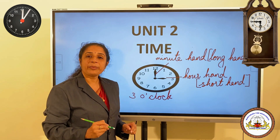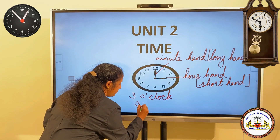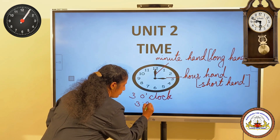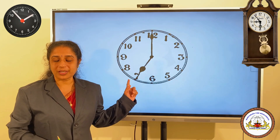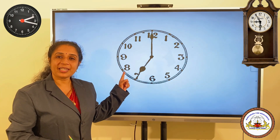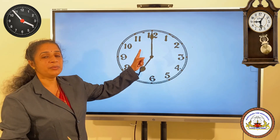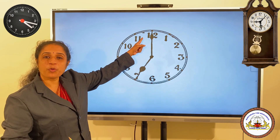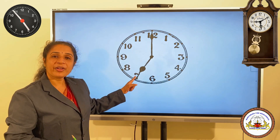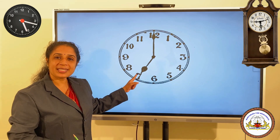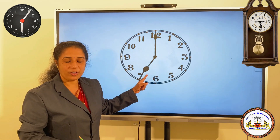Three o'clock can be written as 3 o'clock. Now, I have a question. Can you say the time? Look here. The minute hand points at twelve and the hour hand points at seven. The time is seven o'clock.